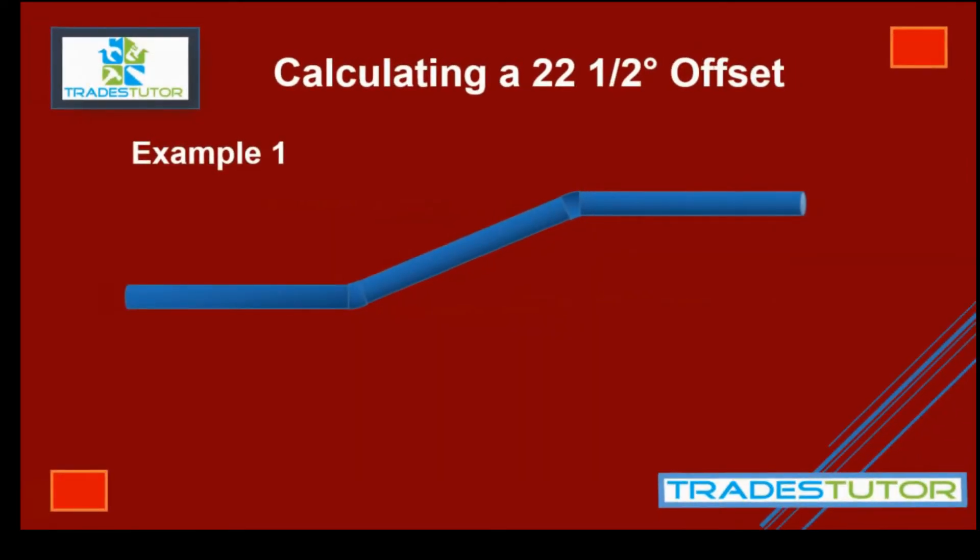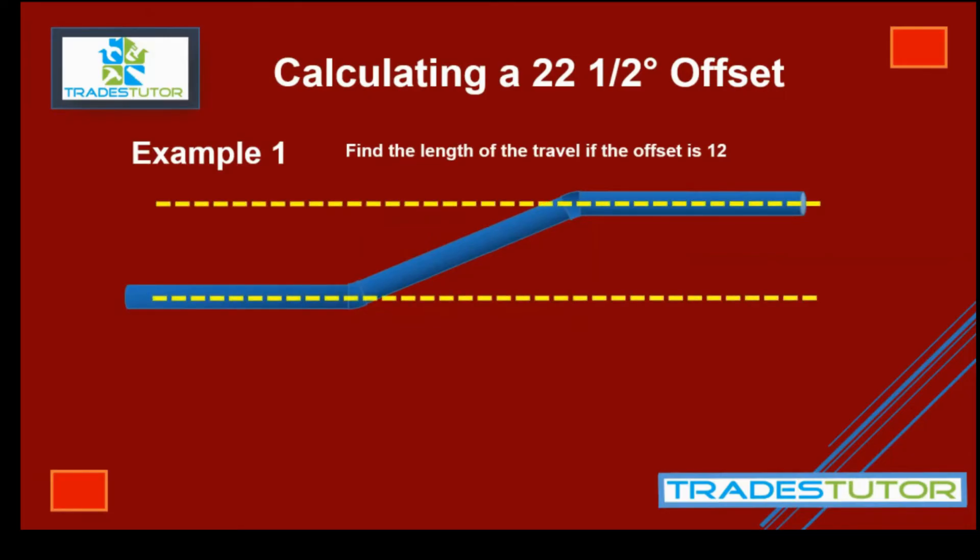All right, so what we'll do here is we'll do a couple examples to show you how to calculate this stuff. So first one, find the length of the travel if the offset is 12. So we can bring our lines back. Our offset's going to be 12.